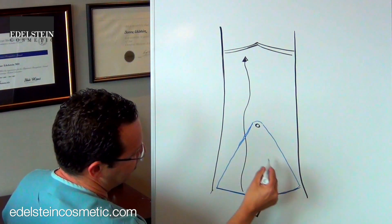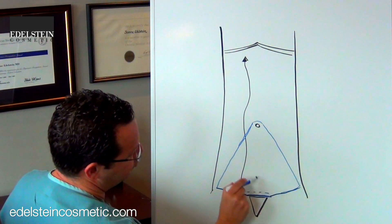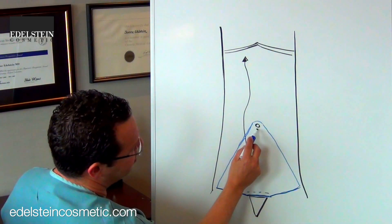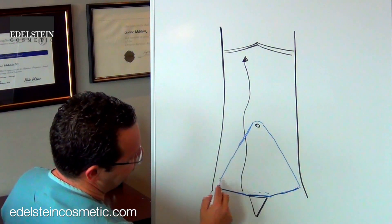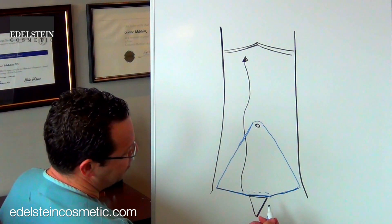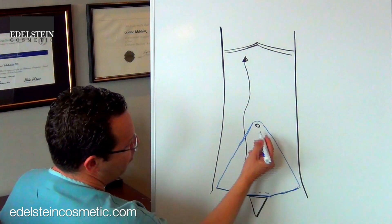So all of this skin, fat, and stretch marks goes. Now you can see that the belly button is sitting in the middle of this triangle.